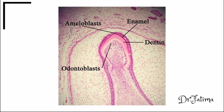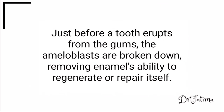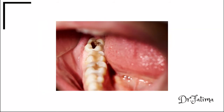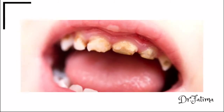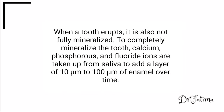Enamel is formed by epithelial cells called ameloblasts. Just before a tooth erupts from the gum, the ameloblasts are broken down, removing enamel's ability to regenerate or repair itself. This means that when enamel is damaged by injury or decay, it cannot be restored beyond the normal course of remineralization.